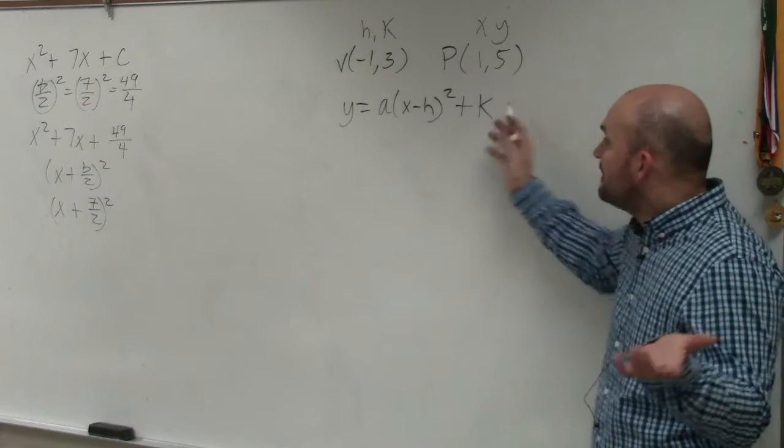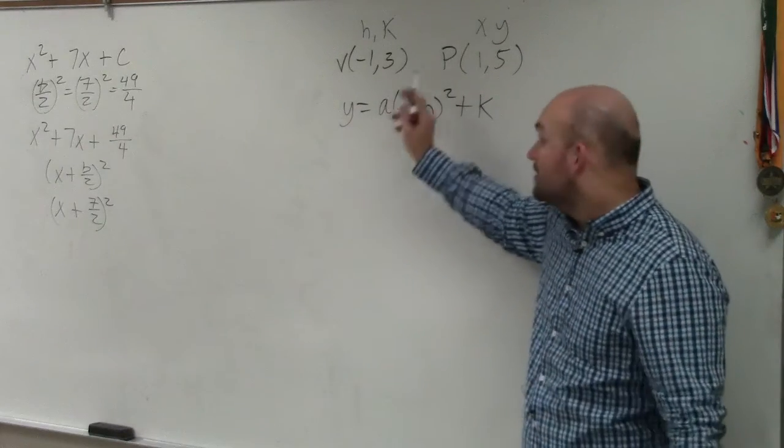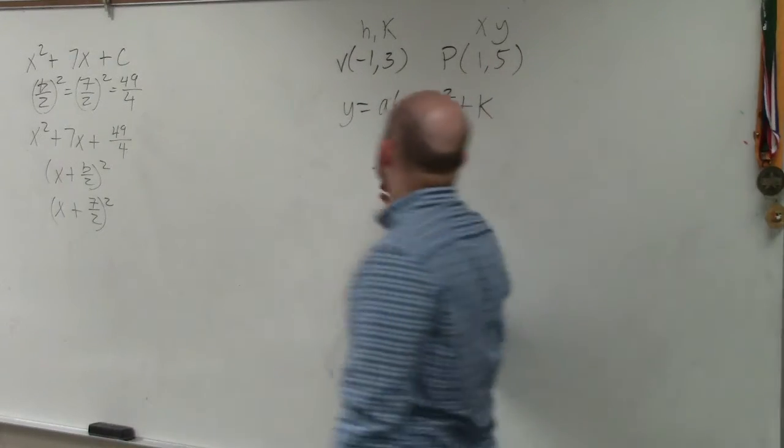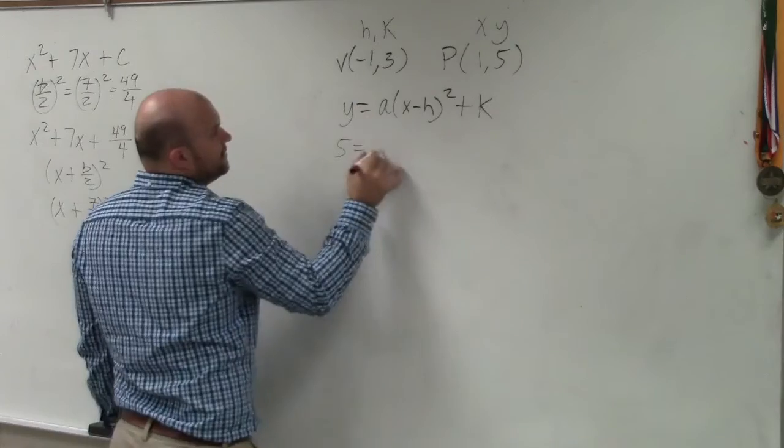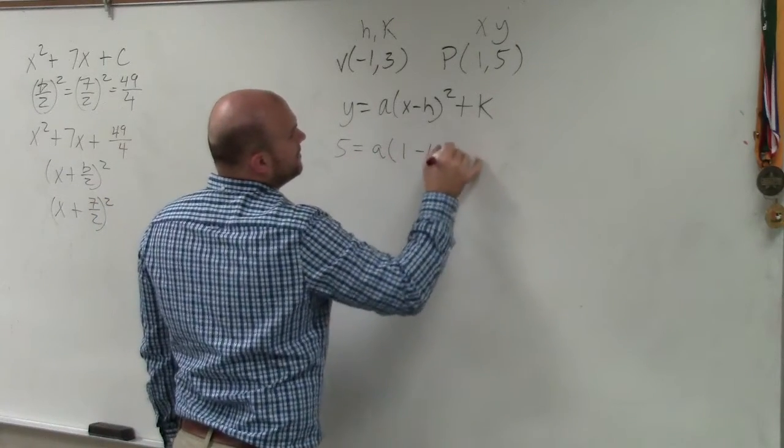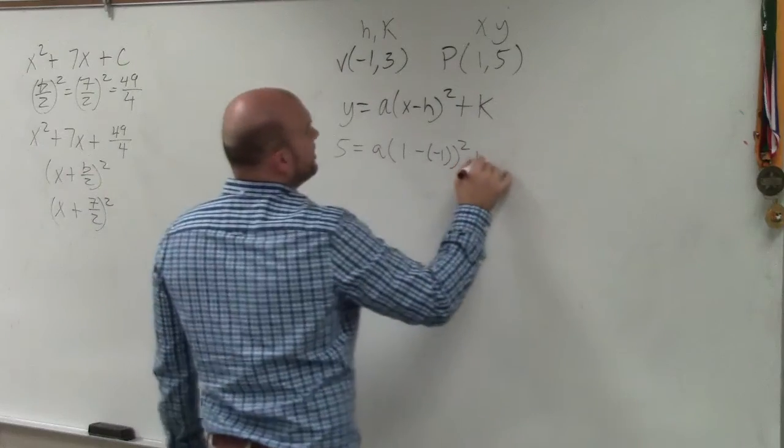Now simply, we have everything covered except for a. So we're going to plug in all this information into our vertex form and then solve for a. So I have 5 equals a times 1 minus negative 1 squared plus 3.